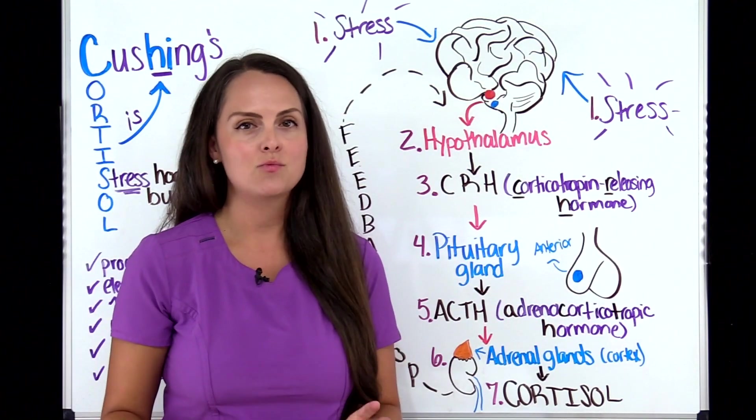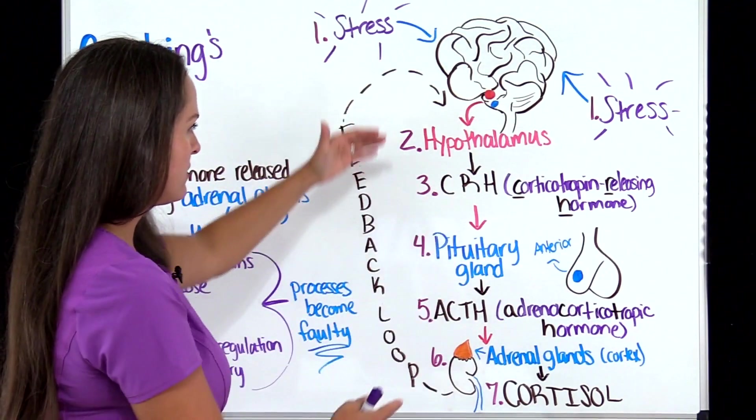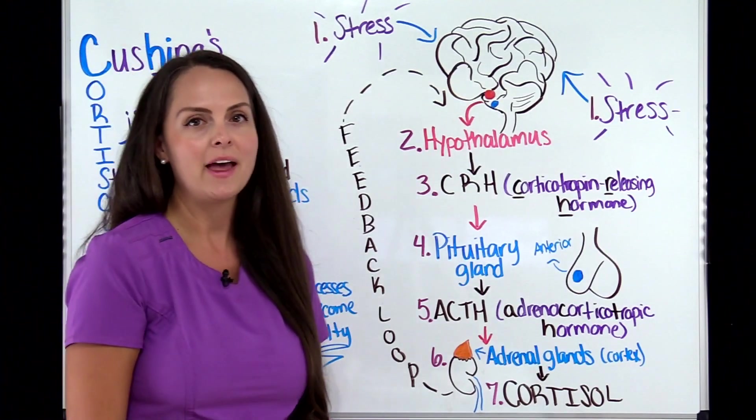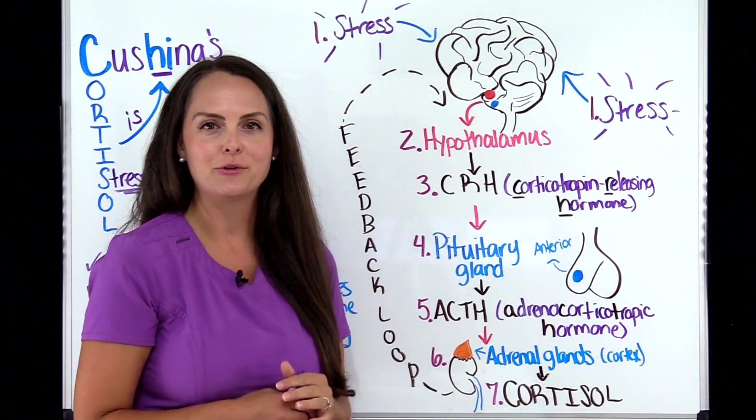And it all starts with these structures here: the hypothalamus, pituitary gland, adrenal glands, and this handy dandy little feedback loop that has been installed in your body.